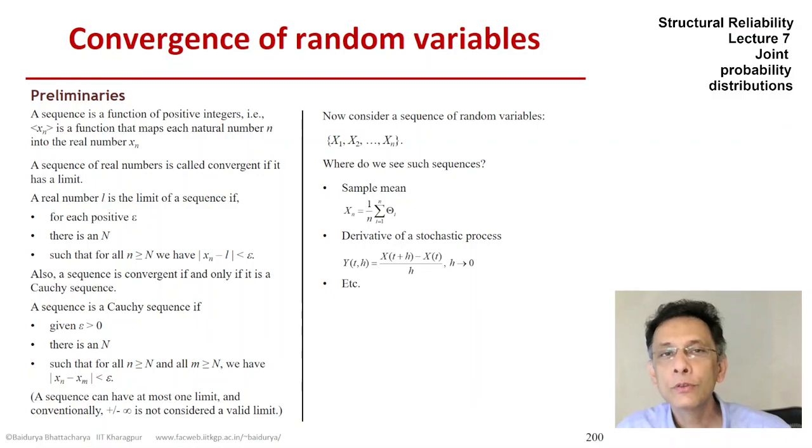So I have put two examples on the screen. One is the estimation of a population mean by taking samples. As the sample size becomes larger and larger, the sample mean would constitute such a sequence of random variables. The other example would be the definition of the derivative of a stochastic process.